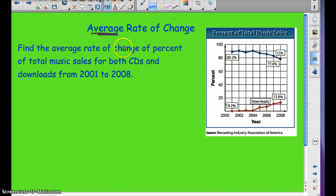Now there's another rate of change called the average rate of change. So we want to find the average rate of change of percent of total music sales for both CDs and downloads from 2001 to 2008. So we're looking at the average rate. So we're looking at the change in percent over the change in time. So let's do the CDs first.